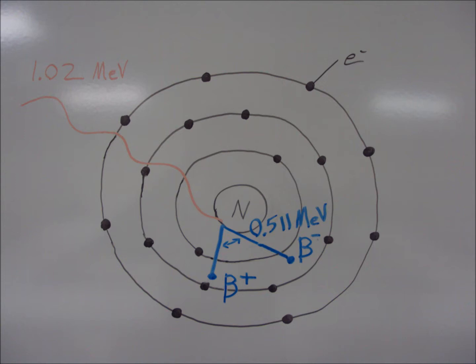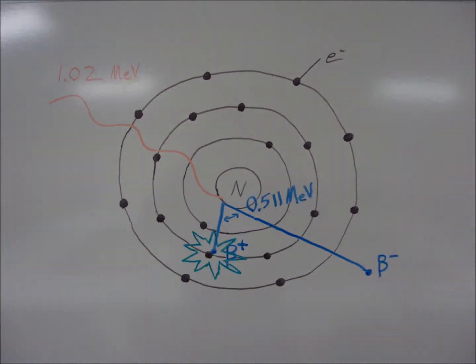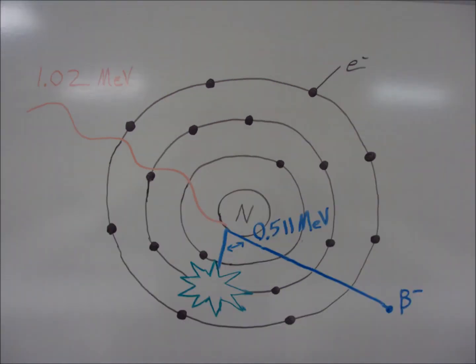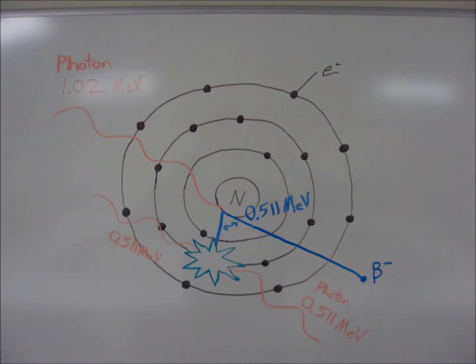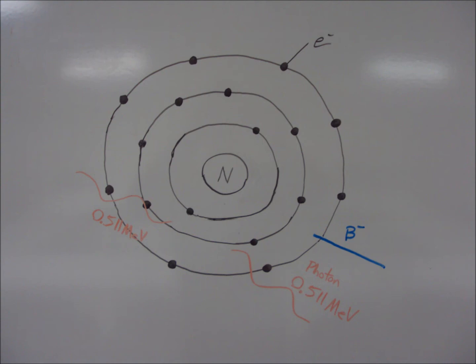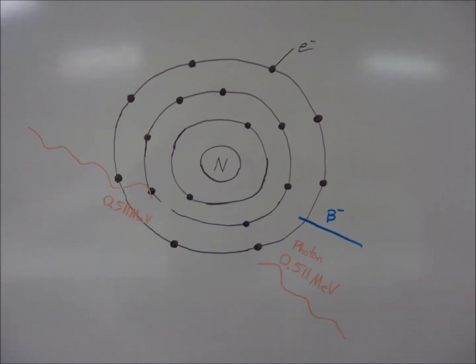This concludes pair production leaving us with annihilation, which occurs when the previously stated beta positive, or positron, interacts with a neighboring electron, in which they both annihilate each other, producing two lower energy photons traveling 180 degrees, or opposite directions from each other. This has been pair production and annihilation.